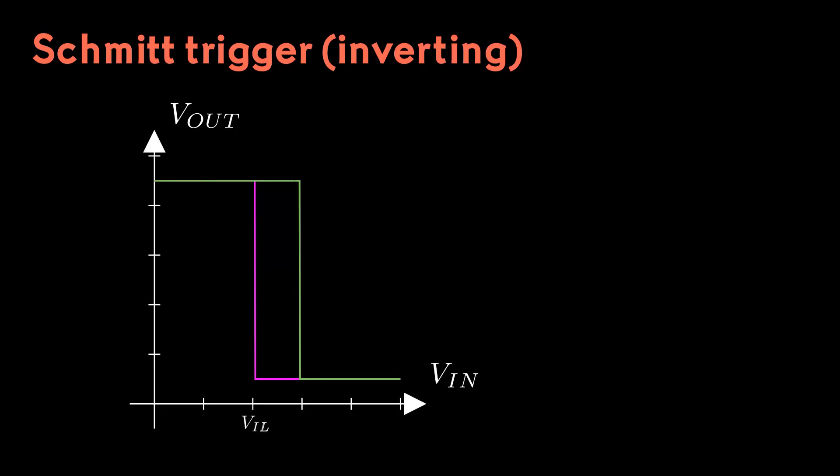We'll use V sub IL and V sub IH to denote the lower and higher input thresholds, and use V sub OL and V sub OH to denote the logic low and high output voltages.